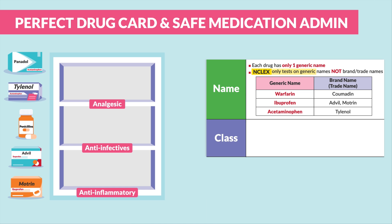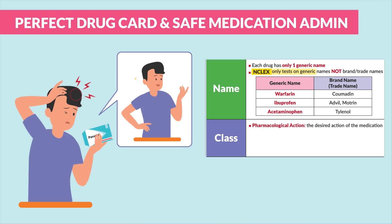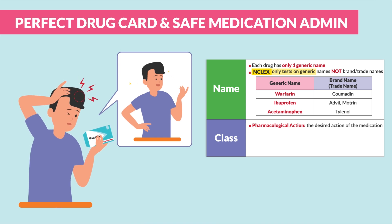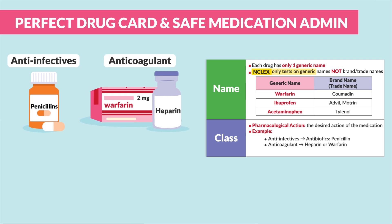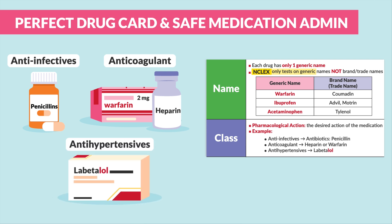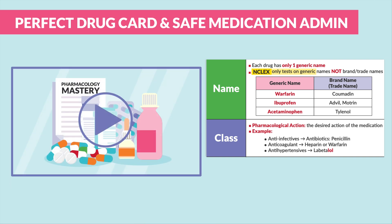The next big one is the class or classification of the medication. This puts medications into a category based on what they do inside or to the body. Pharmacological action is the desired action of the medication. For example, anti-infectives like antibiotics would be penicillin. Anticoagulants like blood thinners would be heparin or warfarin to prevent clots. Antihypertensives to lower blood pressure, for example, would be labetalol.